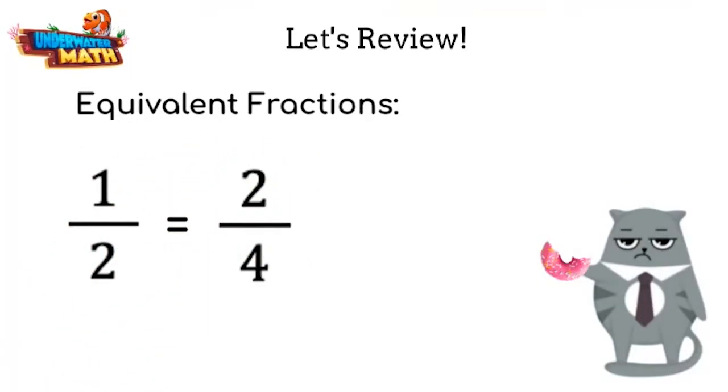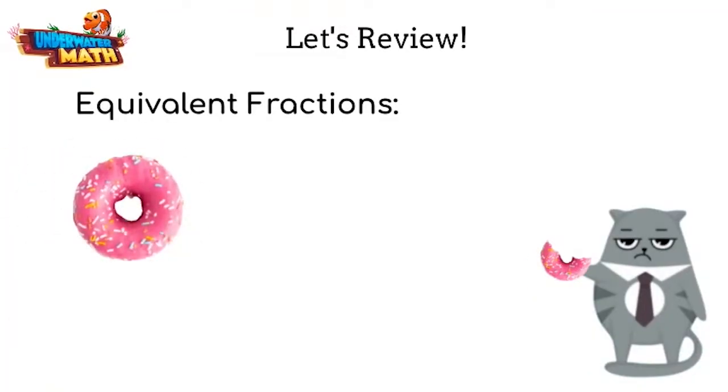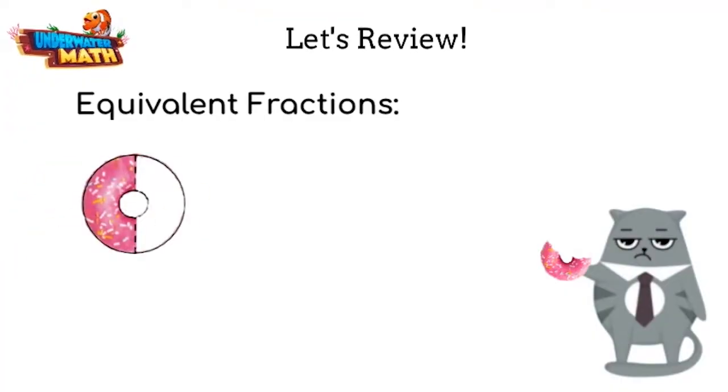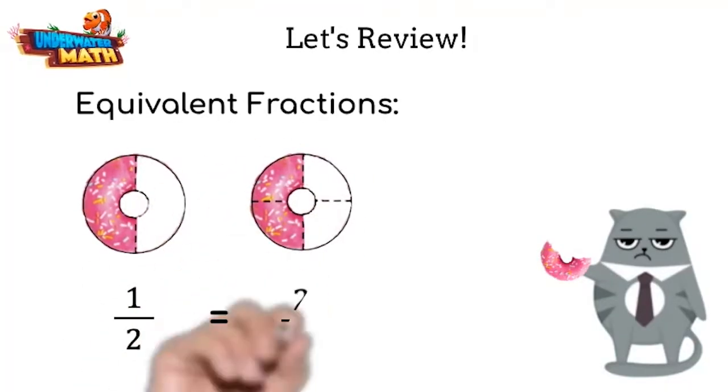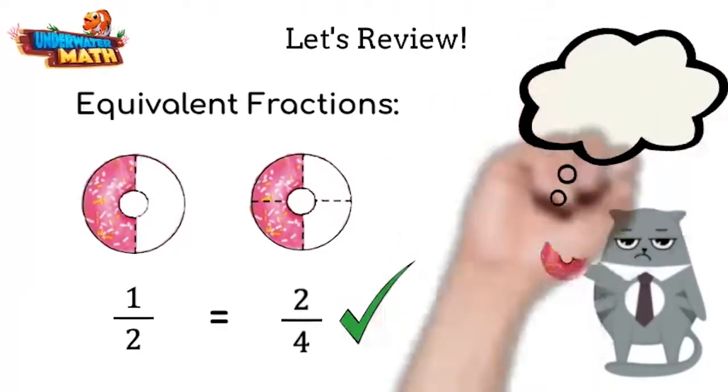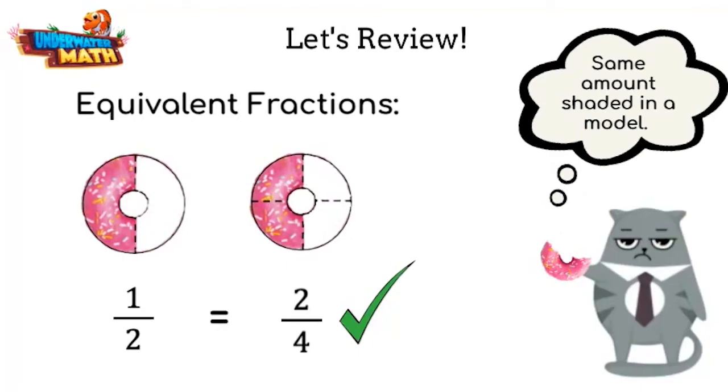Can you explain in donuts please? Sure thing. If I were to cut this donut in two pieces and eat one of the pieces, that would be one half of the donut. That is equivalent to cutting a donut in four pieces and eating two of those pieces. So one half is equivalent to two fourths. They have the same amount shaded. Yes, they may have different numerators and denominators, but their value is the same.